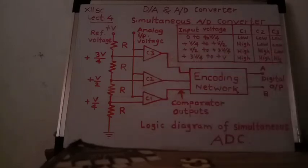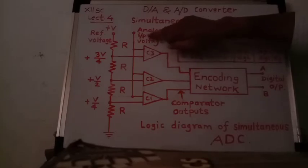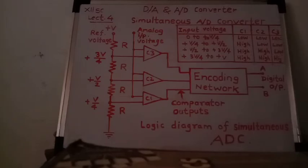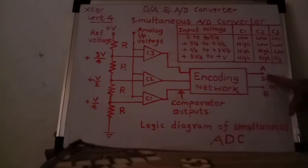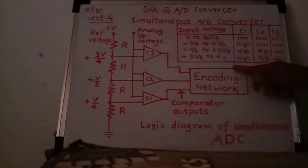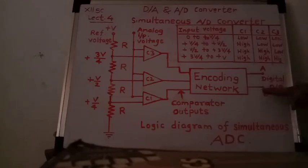The analog input voltage to be compared is applied to one input of each comparator. This is a two-bit simultaneous analog to digital converter with two output bits A and B. Three comparators are required because the formula is 2^n − 1, where n is the number of bits. For n = 2: 2^2 − 1 = 4 − 1 = 3 comparators.